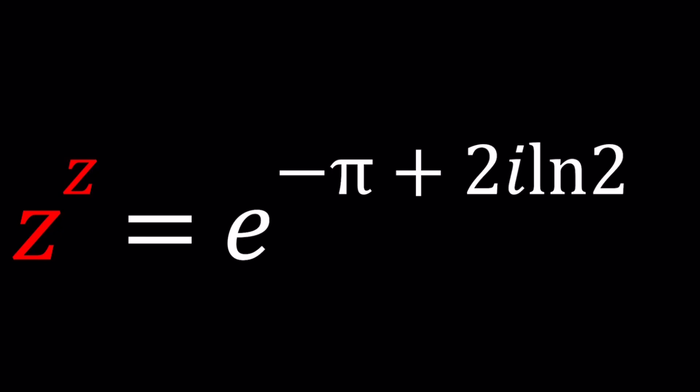We have Z to the power Z equals e to the power negative pi plus 2i ln 2. I'll be presenting two methods, but we're going to go back and forth because I need to show you something. Let's start with the first method.